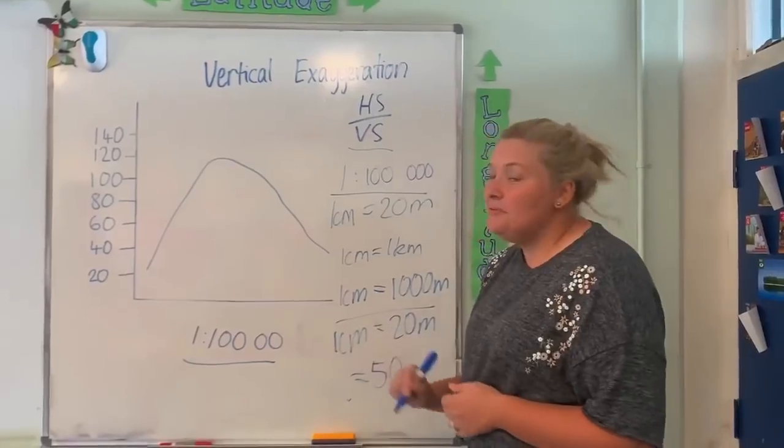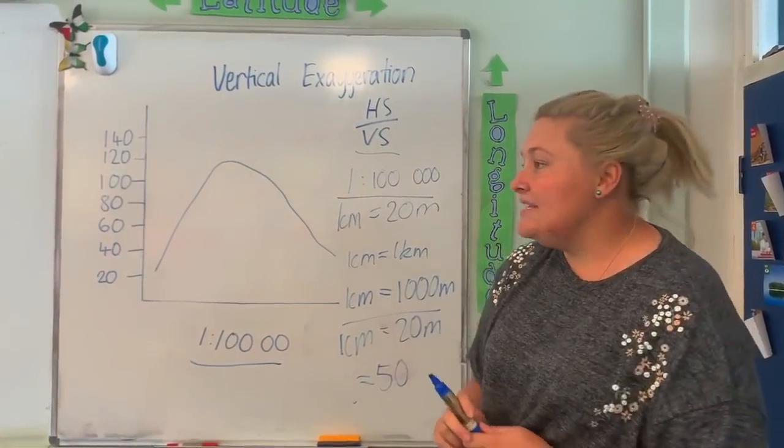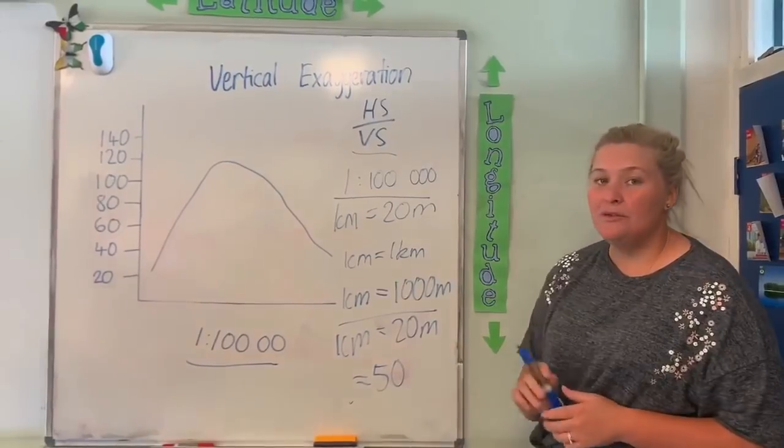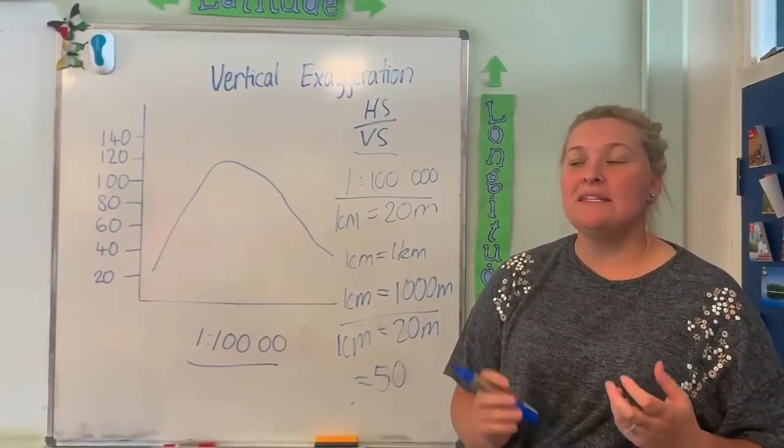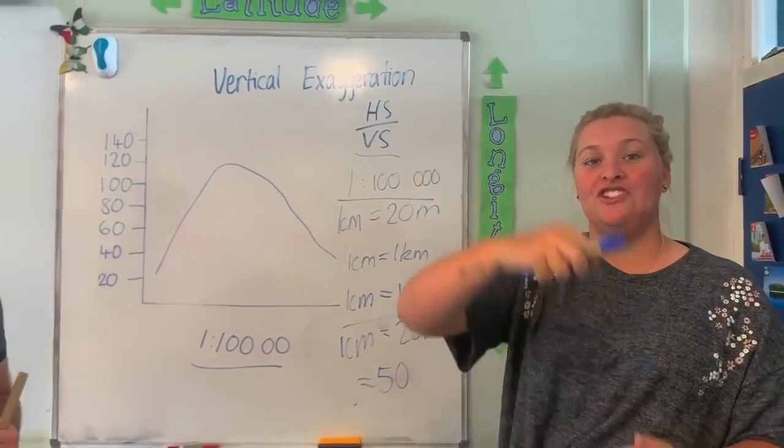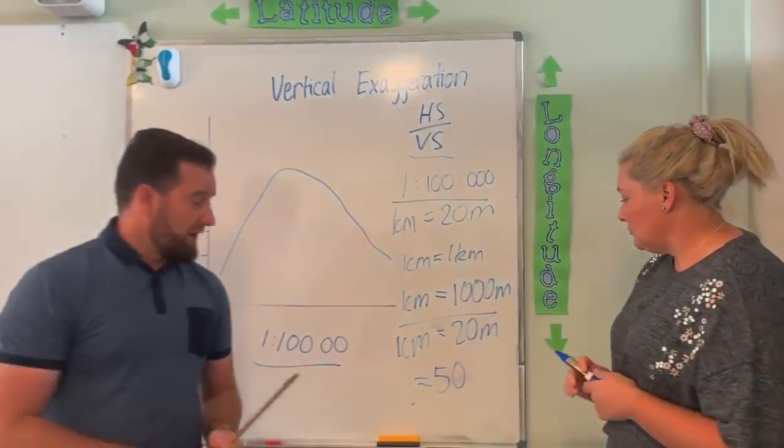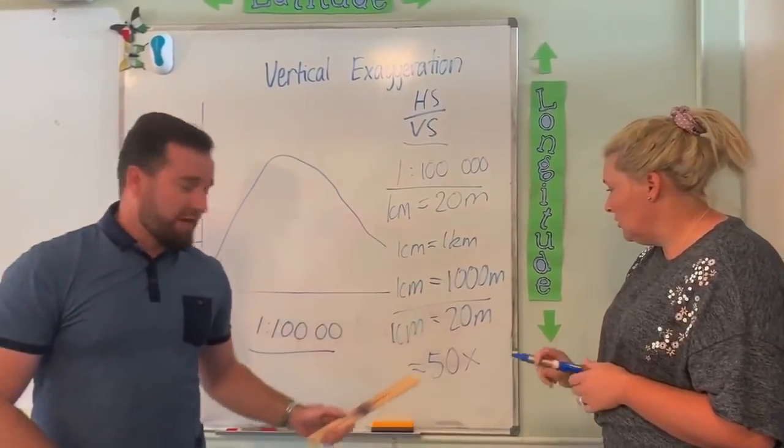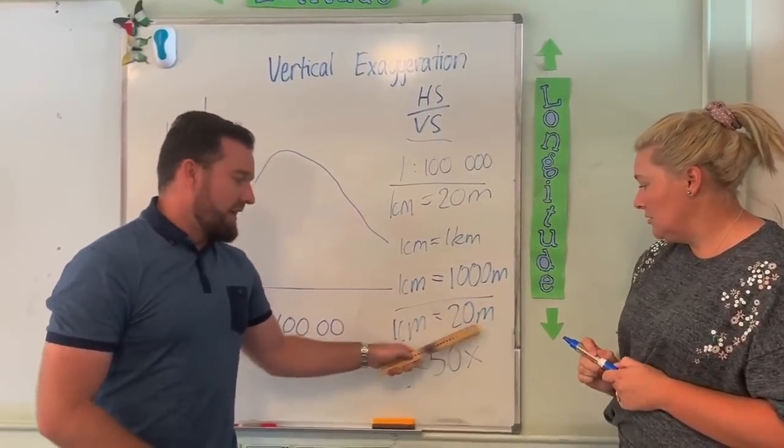Really important here, and this is a little mistake a lot of people make in the HSC, is that it's 50 times. What we're doing here is asking how many times has our picture been vertically exaggerated or stretched upwards. Another way of thinking about it is how much bigger is that number than that number? And it's 50 times bigger.